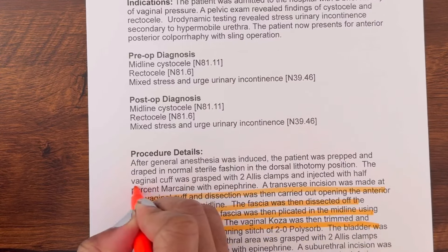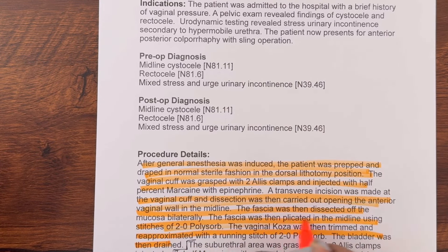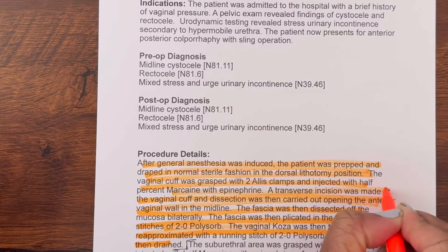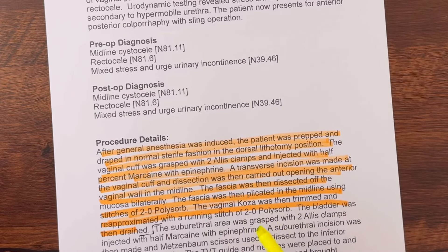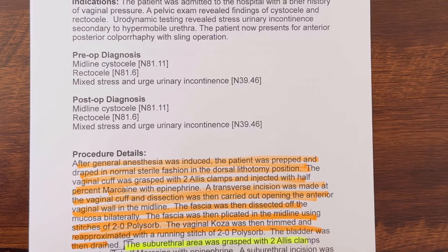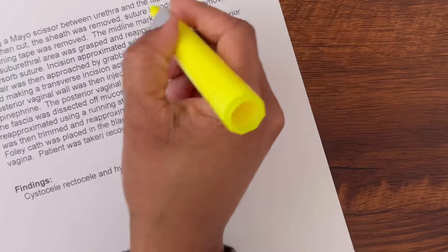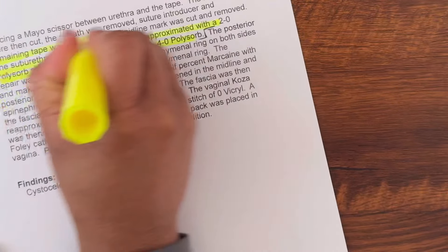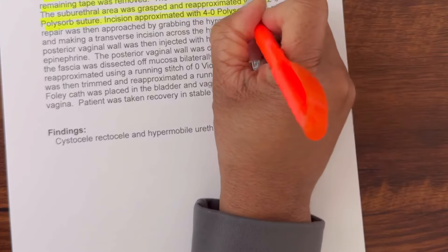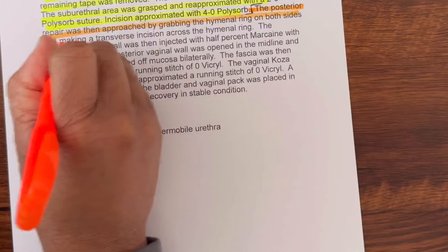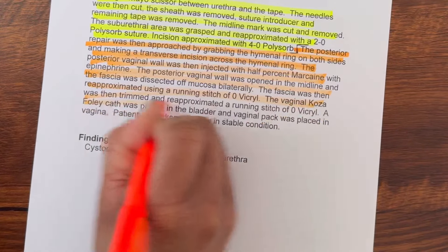What I would do is highlight the different procedures in the operative note. So I'm going to do the anterior repair section in orange, the urethral area in yellow, and then the posterior repair in orange as well. You'll see why in just a second once I pull out my CPT book.